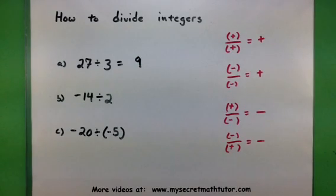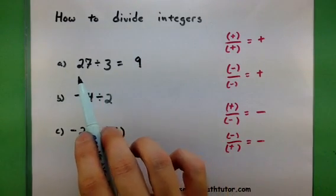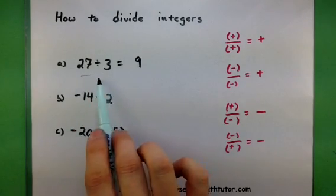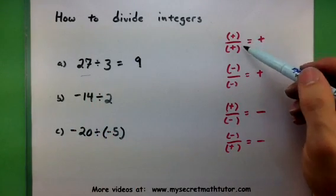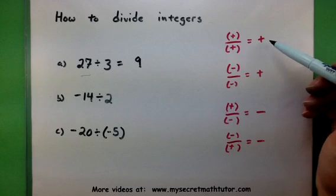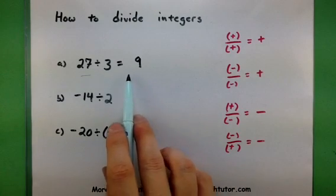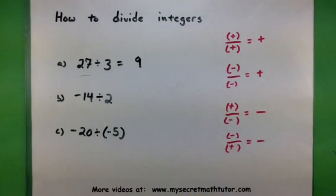Now go back and double-check your signs to make sure everything's okay. So here's a positive 27 divided by a positive 3. Positive divided by a positive answer should also be positive. And sure enough, I'm going to leave my answer as a positive 9. So that one's good.